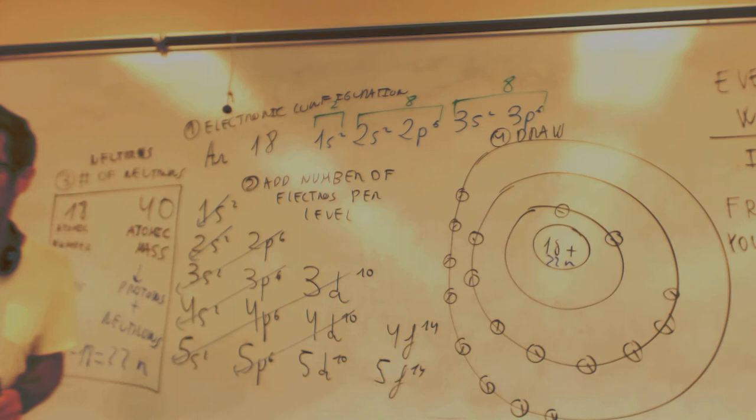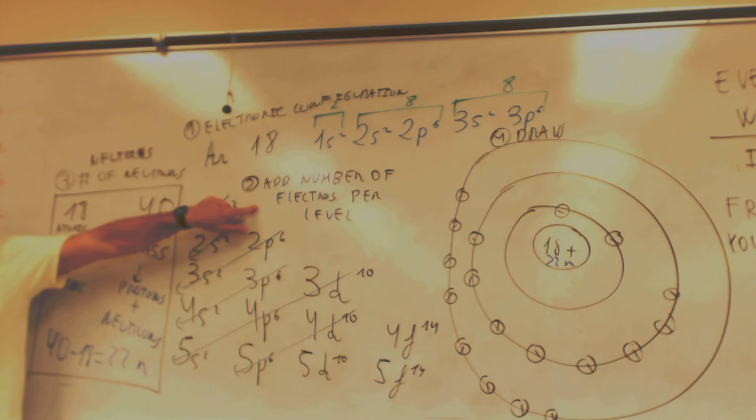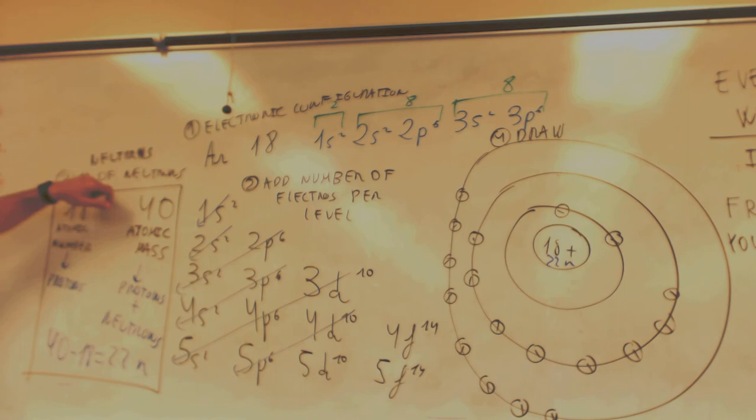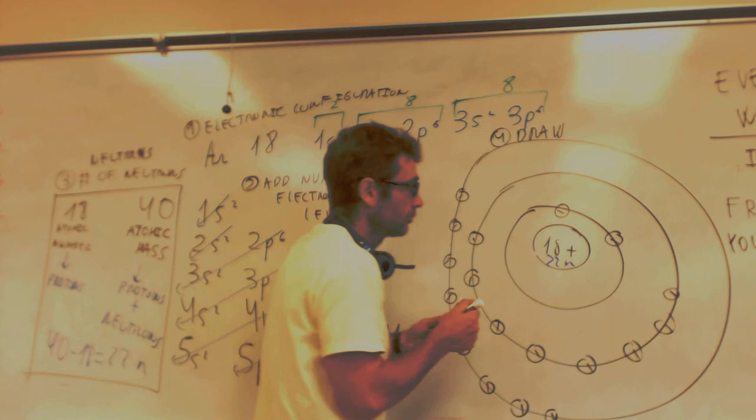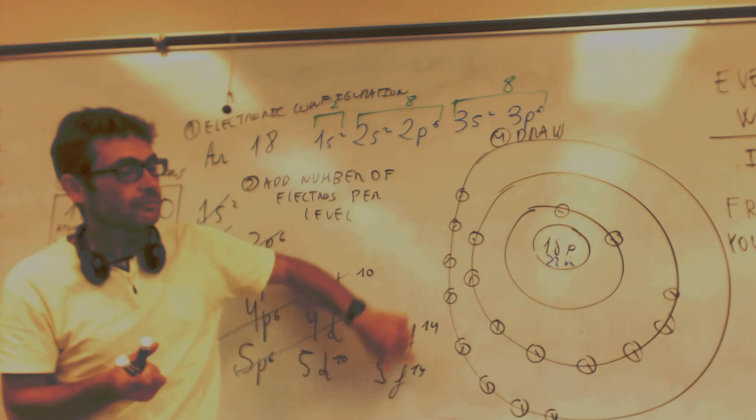So to make the Bohr model for an atom, first you make the electronic configuration. Then you add the electrons for each level. Then you calculate the number of neutrons and then you draw this. First, to not make so many circles in the center, I make 18P plus 22N. I can put here P for protons. Okay? And then the three levels.